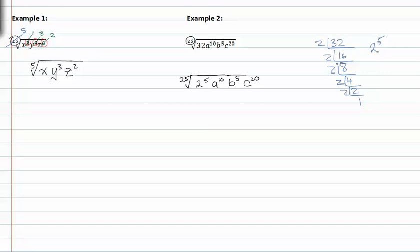Now that we've prime factored the number, let's go through and find the common factor between the index and all the exponents inside the radical.